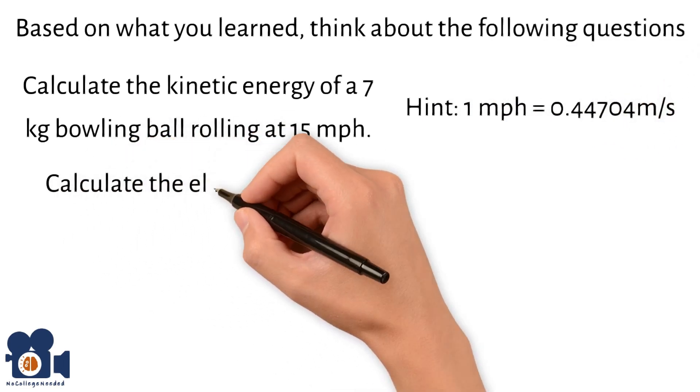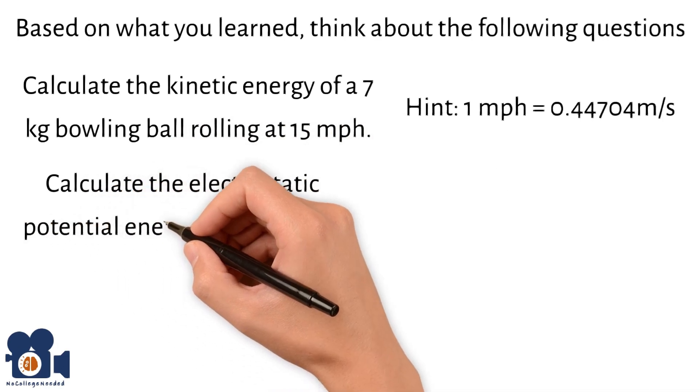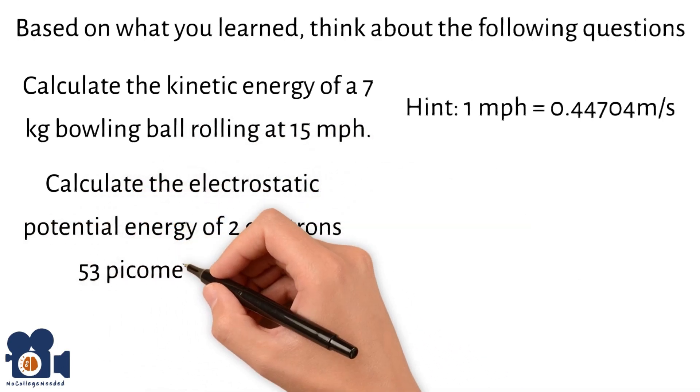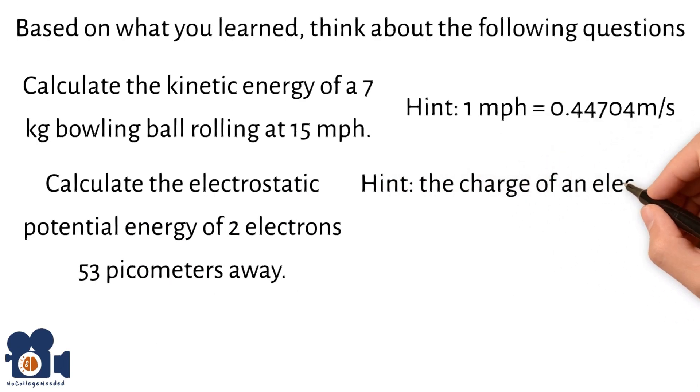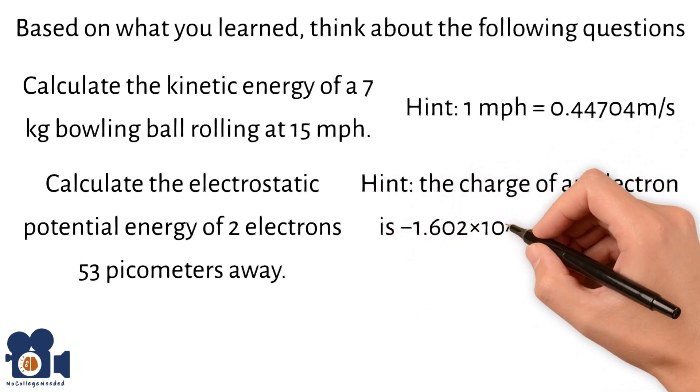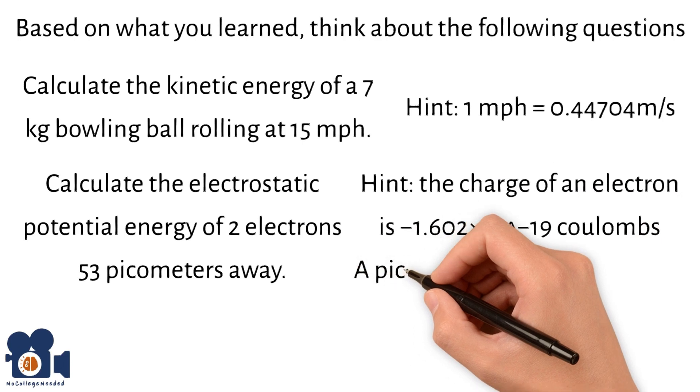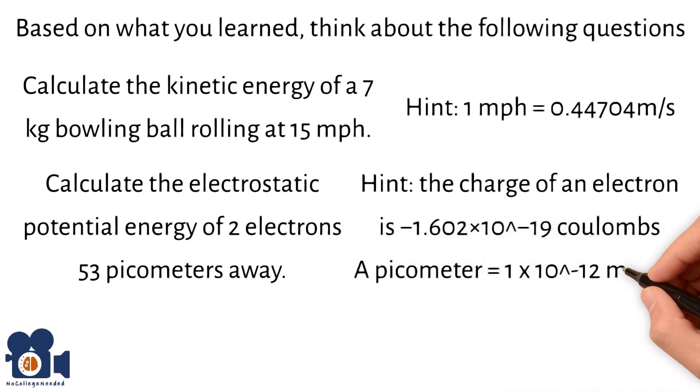2. Calculate the electrostatic potential energy of 2 electrons 53 picometers away. Hint, the charge of an electron is negative 1.602 times 10 to the negative 19th coulombs, and a picometer is 1 times 10 to the negative 12th meters.